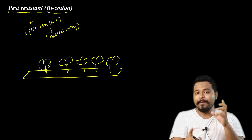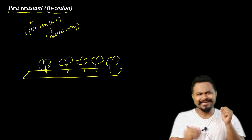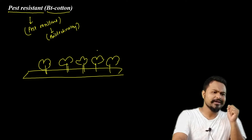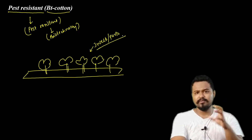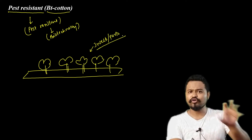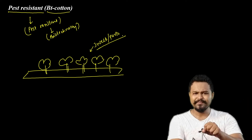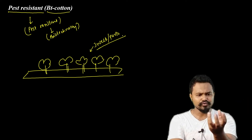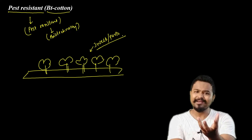In the case of cotton, there are a lot of insects, pests, and worms which are very harmful. This causes a fall block — significant damage to the cotton crop.